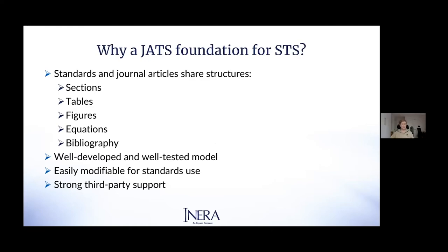JATS was a well-developed, well-tested model already in use by thousands of journals worldwide by 2011. It's well-documented, easily modifiable, and had strong third-party support in tools and vendors. ISO recognized that choosing JATS meant they weren't forging completely new ground — there would already be third-party support for a very similar model. ISO agreed JATS made sense but acknowledged they couldn't use it out of the box; it would need to be modified for standards.